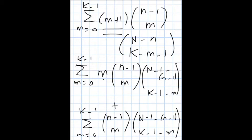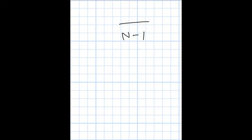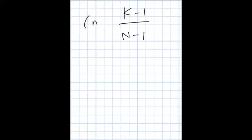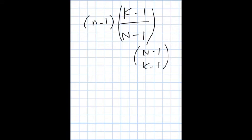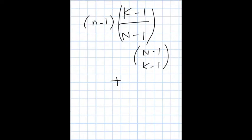The first summation is exactly the sum we used in computing the mean of the hypergeometric random variable. It equals the mean with total population n-1, sample size k-1, and number of items of the first type n-1. Remember we ignored the denominator, so we multiply by C(n-1, k-1). The second summation is nothing more than Vandermonde's identity.